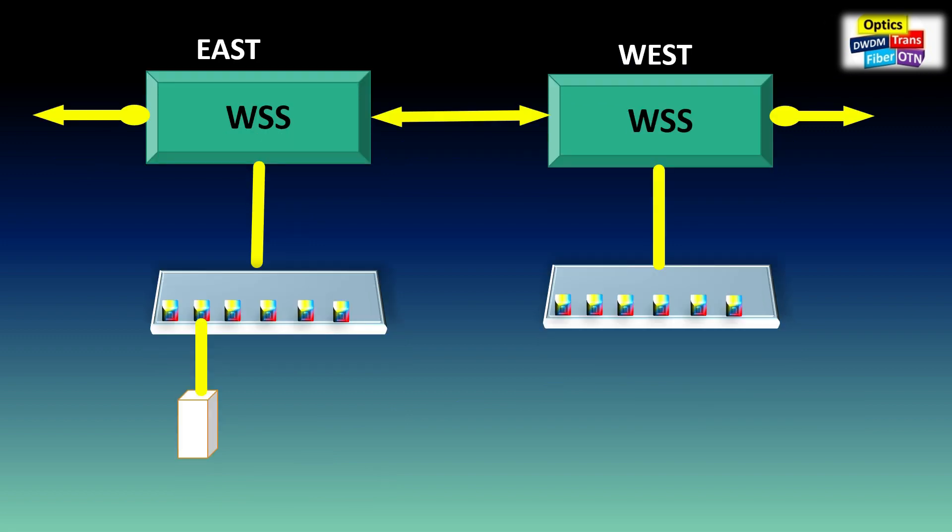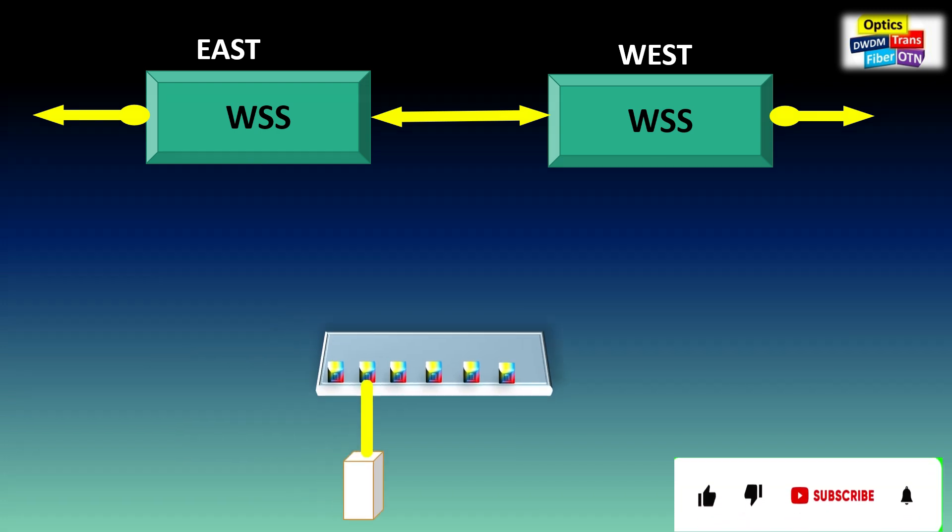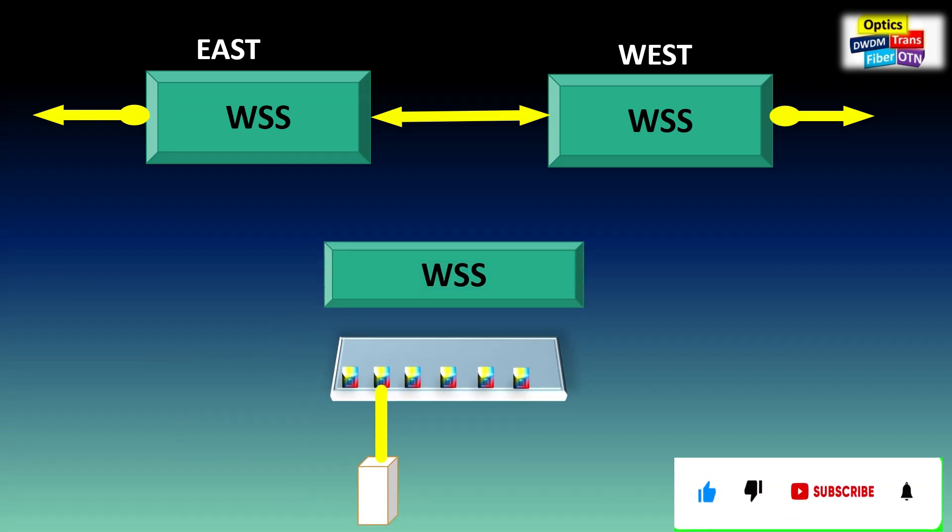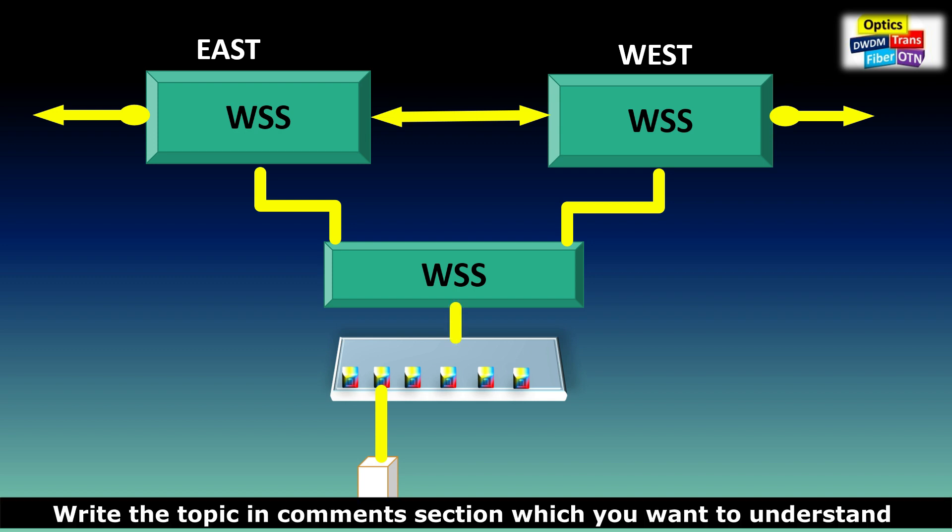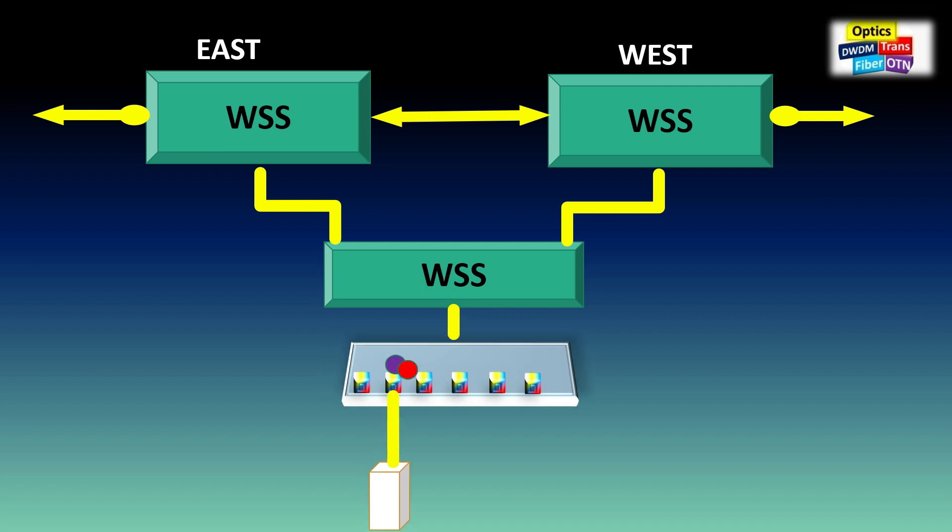Same network can be upgraded to use directionless. To make it directionless, add one more WSS in add-drop and connect with existing WSS ports. And this new WSS signal in-out port connects with multiplexer. Now signal from transponder can go via this new WSS, and based on connection, it will go in specific direction, can send to east or west.